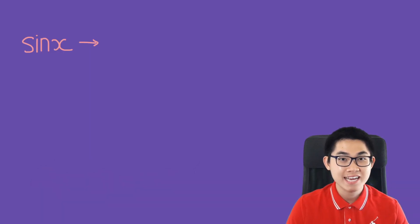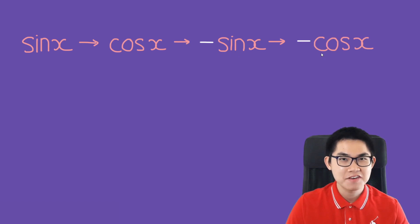So during the calculus test, I would write down sine, arrow, cosine, arrow, negative sine, and then negative cosine.